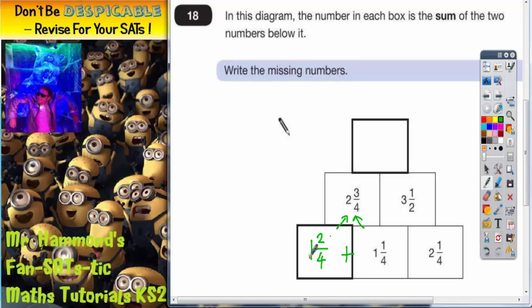Just double check that. One plus another whole one would give you the two, and then two quarters plus one quarter would give you three quarters. So it does indeed work.